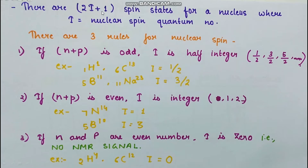There are 2I+1 spin states for a nucleus, where I is the nuclear spin quantum number. The magnetic properties of the nucleus arise from protons and neutrons present in it. Protons and neutrons each have spin number 1/2, and when they are unpaired there will be some resulting nuclear spin I. We can calculate the number of spin states by the formula 2I+1.